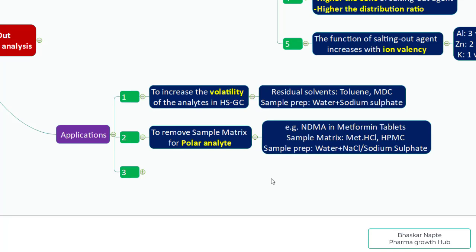For example, with metformin tablets containing the metformin API and HPMC as a controlled release polymer, these two components give a lot of interference during method development. By adding a suitable salting out agent like sodium fluoride, the metformin and HPMC will start to precipitate out of the solution. You will see much less HPMC and metformin in the aqueous solution, reducing interference. You can use the salting out effect when you are concerned about the sample matrix effect.